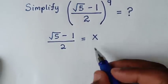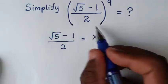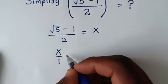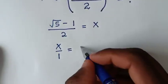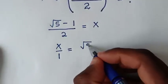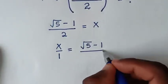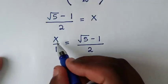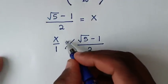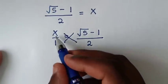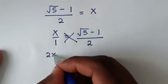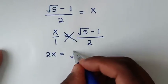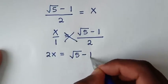In the next step, we write x over 1 equals square root of 5 minus 1 over 2, then cross multiply. So x times 2 gives 2x, equal to 1 times square root of 5 minus 1, giving 2x equals square root of 5 minus 1.